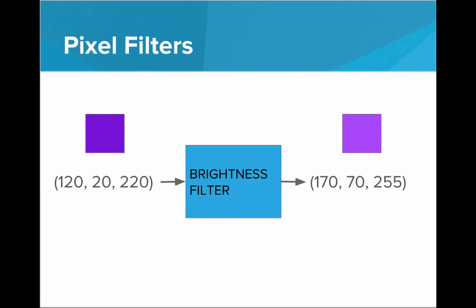In order to brighten this pixel, all we have to do is add to each of these numbers. We'll add 50 to the R value, add 50 to the G value, and add 50 to the blue value. If we add the same amount to each channel, we will keep the color the same and we'll just brighten it.